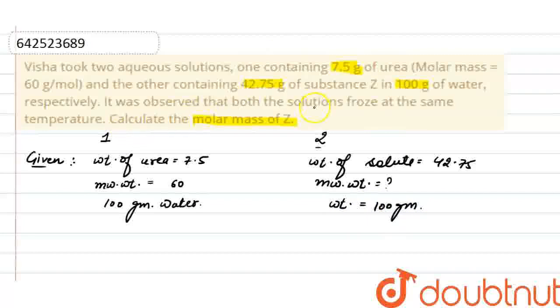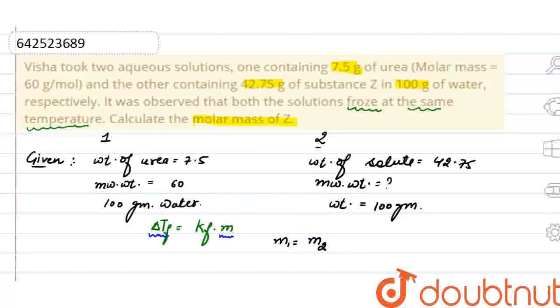Now, in this question, the given statement is that both the solution froze at the same temperature. That is, according to depression in freezing point, delta Tf is equals to Kf into molality. If they freeze at same temperature, then their Tf is equal. And we can say if their Tf is equal, their molality is also equal. So, we can say that molality of both the solutions is equal.